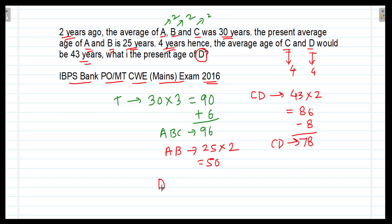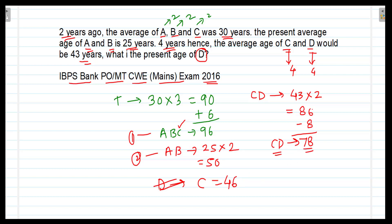We have to find the age of D. From the total present age of A, B and C being 96, and the total present age of A and B being 50, subtracting gives the age of C: 96 minus 50 equals 46. The present age of C and D is 78. Subtracting the age of C from the total age of C and D gives the age of D: 78 minus 46 equals 32 years. Therefore, the age of D is 32 years.